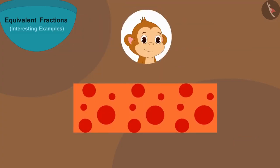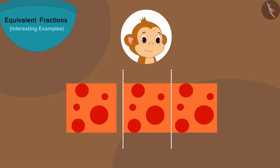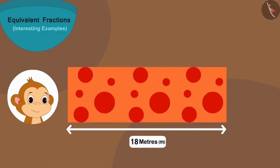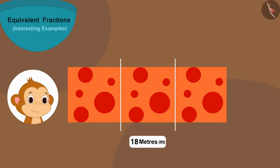Absolutely right! In this way Babban will cut his cloth into three equal parts and take one part from it, and that would be one-third of the cloth. If we divide 18 meters into three equal parts,